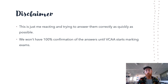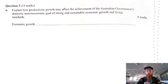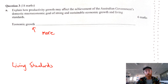Question 3a: explain how productivity growth may affect the achievement of the Australian government's domestic macroeconomic goal of strong and sustainable economic growth and living standards. This question is purely theoretical, breaking down into two three-mark parts. You need to talk about the impact of productivity growth on economic growth, and the impact on living standards. First, describe what productivity growth is — a business getting more output per unit of input.